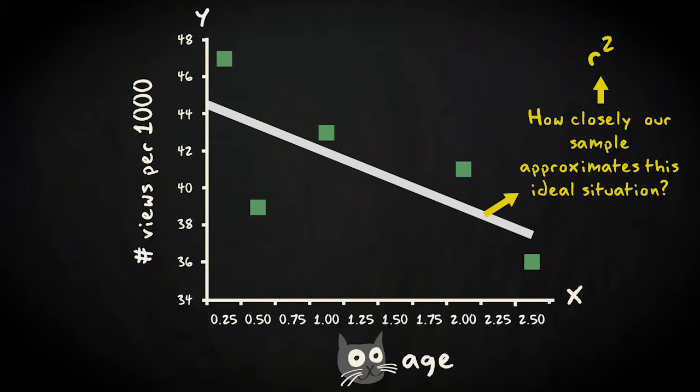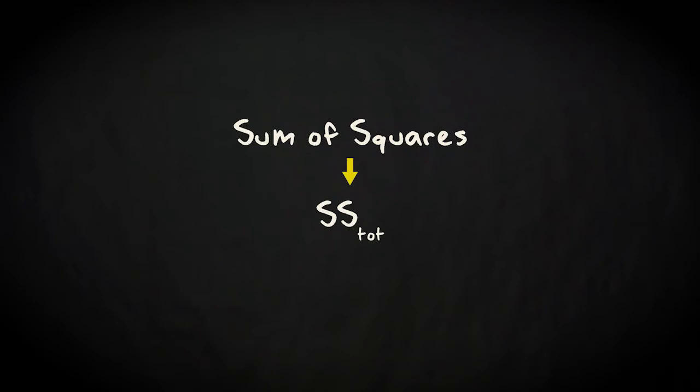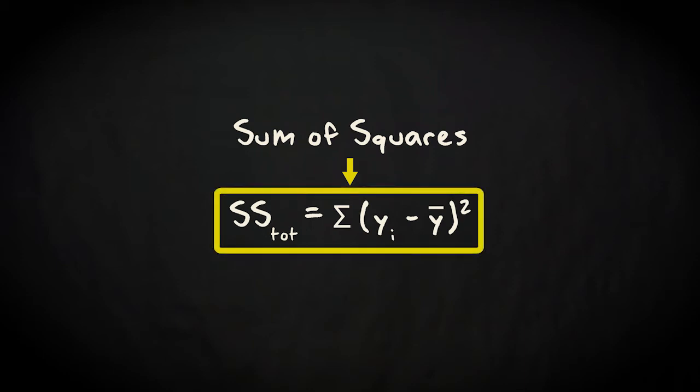Mathematically, all the variation in the response variable is expressed as the total sum of squares. You get the total sum of squares by taking the differences between each observed popularity score, y sub i, and the mean, y bar, squaring these differences and adding them. Don't forget to square, otherwise the negative and positive differences will cancel each other out. Notice that this measure of variation is almost the same as the variance. We just don't divide by n minus 1.